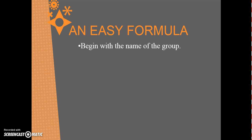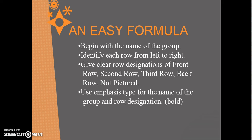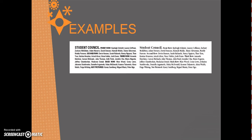You want to begin with the name of the group, and sometimes we don't do that because at the top of the picture, or somewhere on the picture, that is already stated. Always, even just in regular captions, always identify people from left to right. Give clear designations of those rows, and include first and last names of everyone in the group photo. This is not somewhere where you will want to have creative freedom.